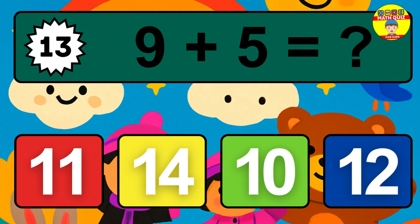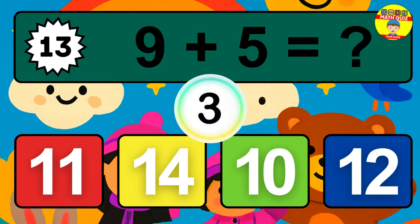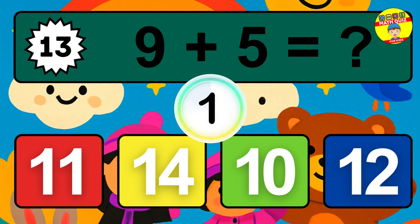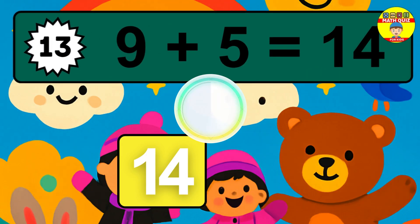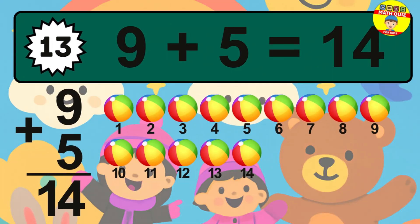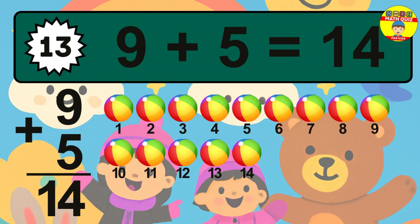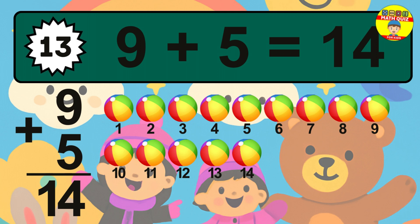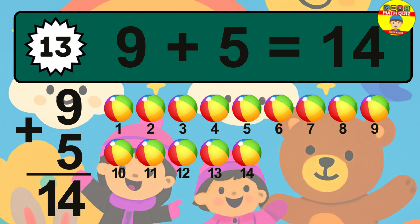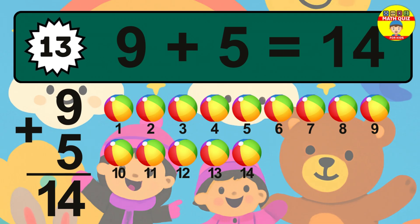Question 13. 9 plus 5 equals what? The answer is 9 plus 5 is 14. Let's count it: 1, 2, 3, 4, 5, 6, 7, 8, 9, 10, 11, 12, 13, 14.